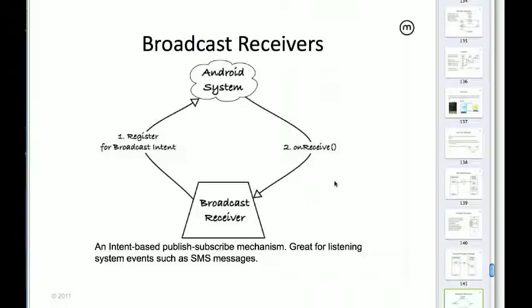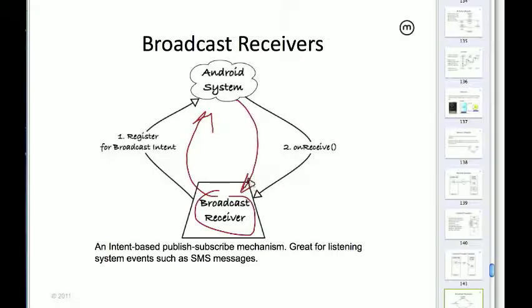Finally, we have something called a broadcast receiver — basically a publish-subscribe mechanism. You have a piece of code and you want to subscribe it to some event. When something happens, I want to know. That something could be SMS arriving, system booting, battery running low, plugging into power, network going down or up. When that event happens, because you're subscribed, you get a notification and your code wakes up and does whatever it needs to. It's an observer pattern boiled down into Android. These are basically our main building blocks.